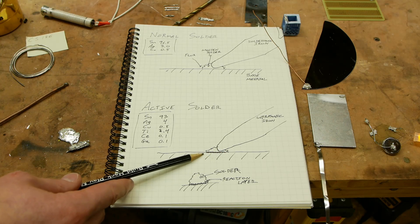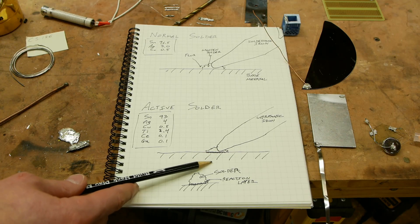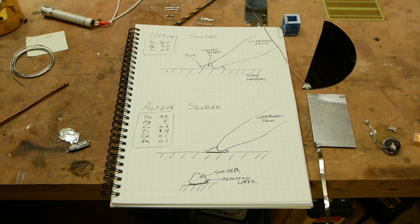There's this intermetallic region here where we have compounds that have properties of both the non-metal and the metal and form this bridge between.